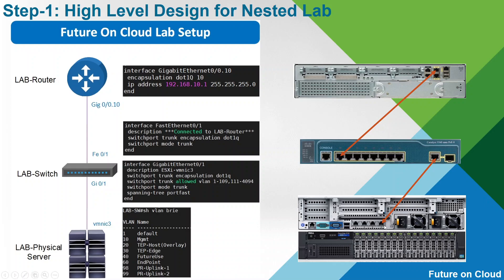As you can see on the right hand side, I am using VMNIC4 which is connected to Gigabit 0/1 of the 3560 switch, and this is the configuration of Gigabit 0/1. It is configured in trunk mode. My FastEthernet 0/1 is connected to the physical router. This is the configuration of FastEthernet 0/1, and on the router side, Gigabit 0/0/10 is configured with the following IP. I am using sub-interfaces on the router side, and these are the VLANs I have created on my physical switch.